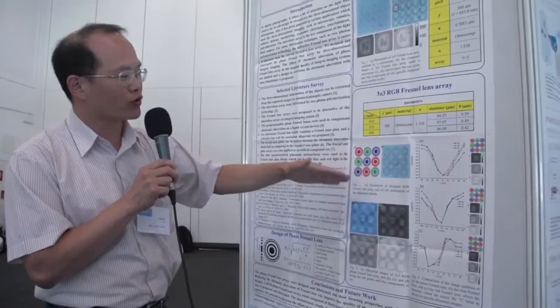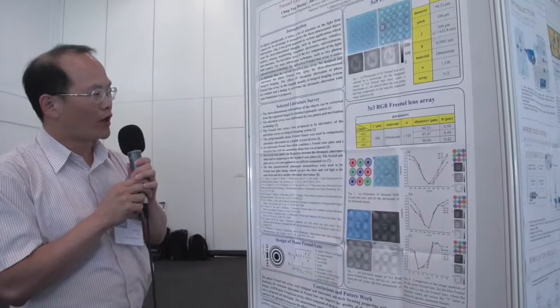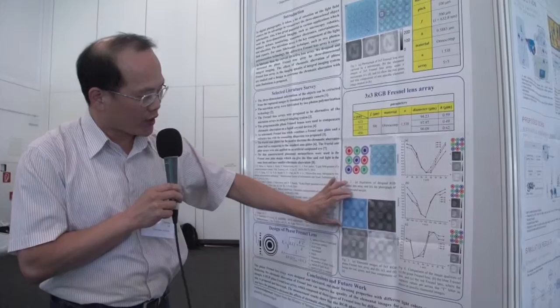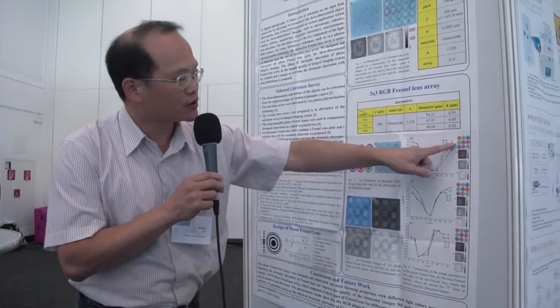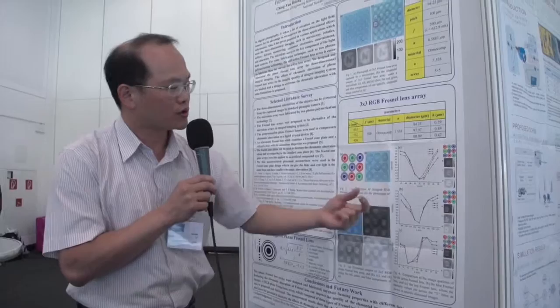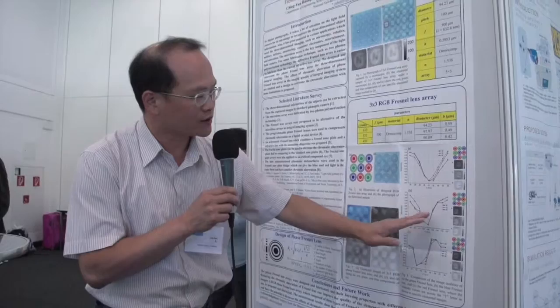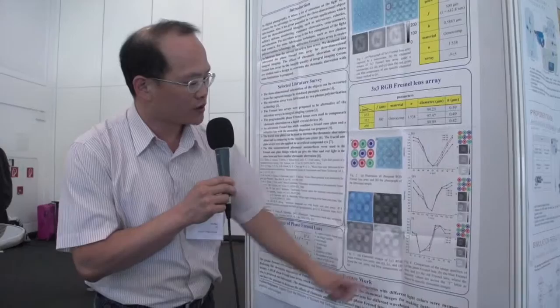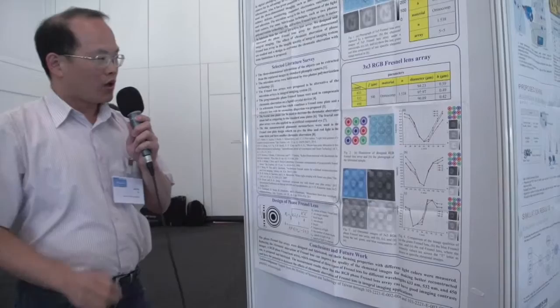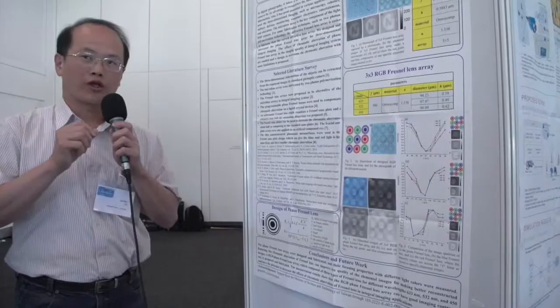So we propose a structure called the RGB Fresnel lens spread array. It looks like this — red, green, blue arranged in an alternating pattern. We fabricate three times the smaller array. Checking the results: for the green lens, you can see it has better contrast for green light. For the red light, the red lens is not very sensitive to other colors. And for the blue lens, it performs well for blue colors. This confirms that our proposed structure may be possible to overcome the chromatic aberration.